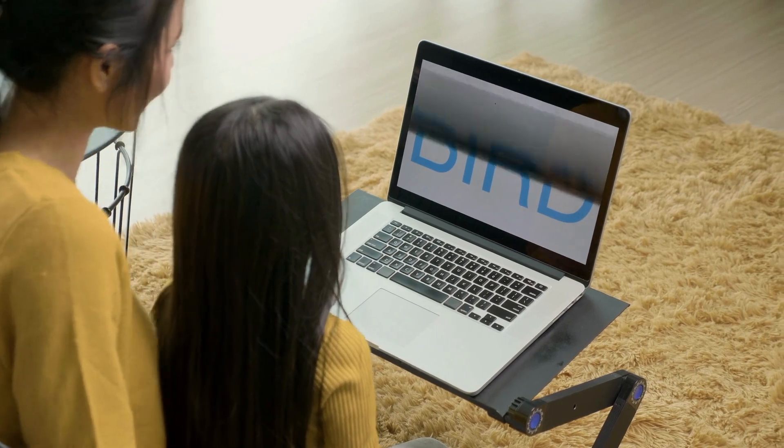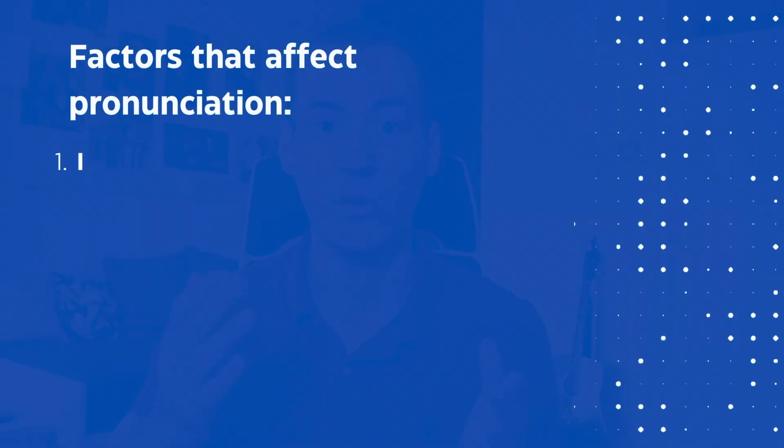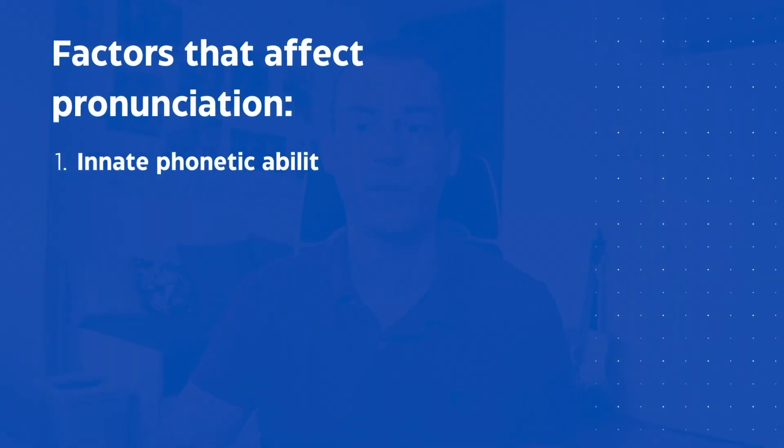Nevertheless, the most common reason is the transfer or interference of the mother tongue. Generally, errors made in pronunciation are due to differences in the sound system and spelling between your mother tongue and English. But to be even more specific, there are some factors linked with your native language that affect your pronunciation, and those are innate phonetic ability,